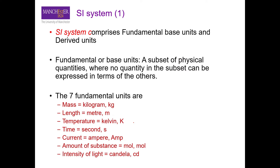There is an internationally agreed SI system comprising fundamental base units and derived units. Fundamental units are a subset of physical quantities where no quantity can be expressed in terms of the others. In the SI system we have seven fundamental base quantities: mass (kilogram), length (meter), temperature (Kelvin), time (second), electric current (ampere), amount of substance (mole), and luminous intensity (candela).